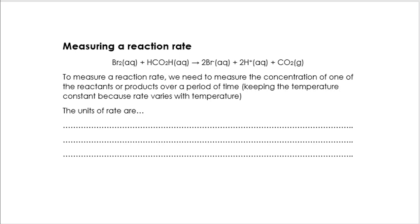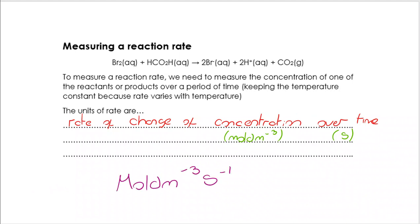Before we get into actually using that information, what would the units of rate be? Well, remember from the definition, we spoke about it being the rate of change of concentration over time. So let's start with that as our basis. The rate of change of concentration over time. Now, we know that concentration is measured in moles per decimetre cubed. And we know that time is measured in seconds. So concentration over time would be mole dm to the minus 3 over s. But we put that into standard form and we get mole dm to the minus 3 s to the minus 1.